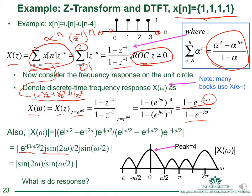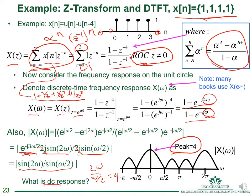The two j's cancel, leaving a phase term in front and the magnitude |X(ω)| = |sin(2ω) / sin(ω/2)|. Since |e^(j·any angle)| = 1, the magnitude is just sin(2ω) / sin(ω/2). For the DC response using the small-angle approximation, we get 2ω / (ω/2) = 4, which is the peak value at ω = 0.